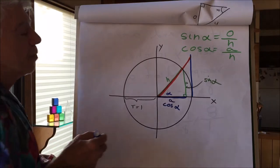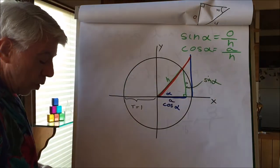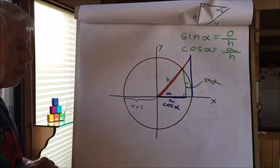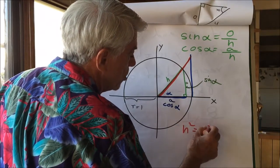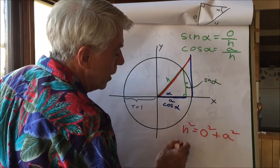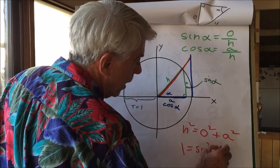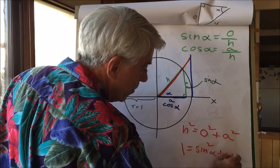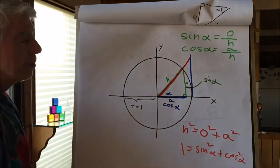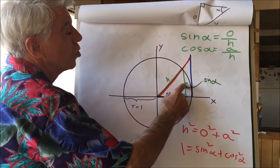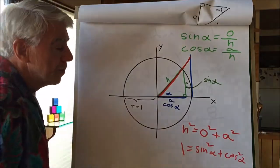Applying the Pythagorean theorem: the hypotenuse squared is equal to the sum of the squares of the other two sides. The hypotenuse is 1 in this case, which makes things very simple. Hypotenuse squared equals opposite squared plus adjacent squared — the hypotenuse is 1, the opposite is sine, and the adjacent is cosine. So 1 equals sine squared of alpha plus cosine squared of alpha. These two sides when squared must add up to 1.